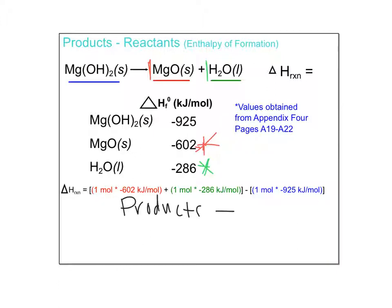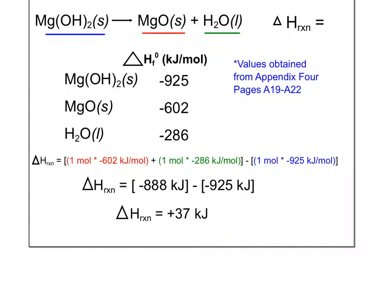These are my products on this side. I usually put them in one bracket together. Minus, now let's look at our reactant. There is one mole of magnesium hydroxide with a heat of formation of negative 925. I got negative 888 kilojoules for my products and negative 925 from my reactants. Be careful when subtracting a negative. I know this is not pre-algebra, but AP Chem kids make lots of silly mistakes. I got the heat of this reaction as 37 kilojoules per mole.